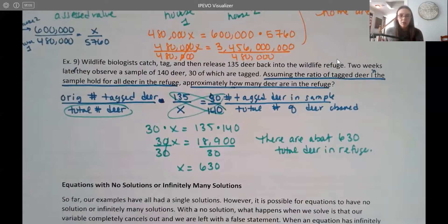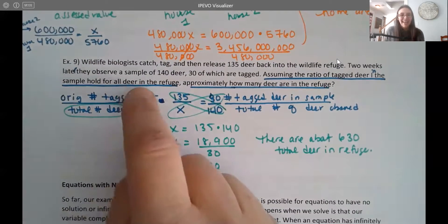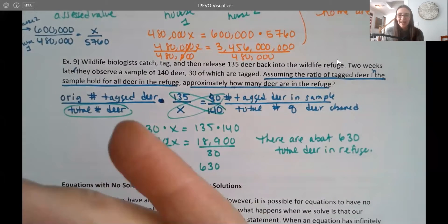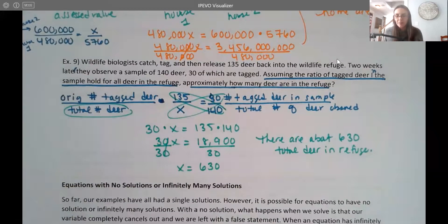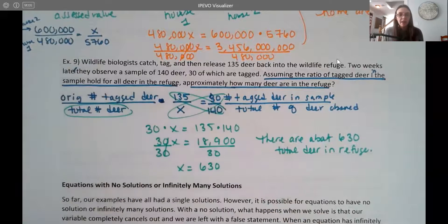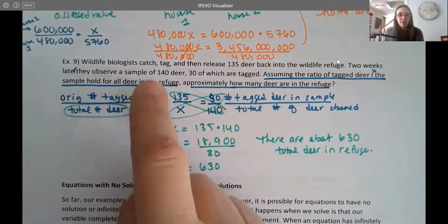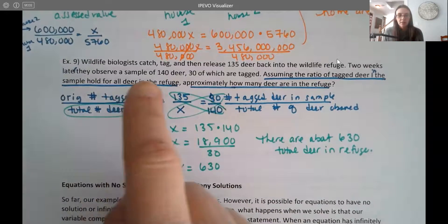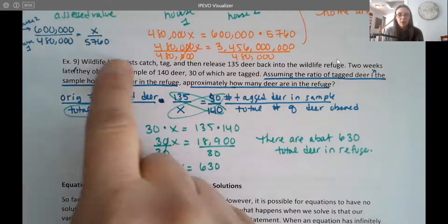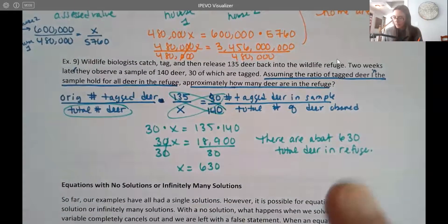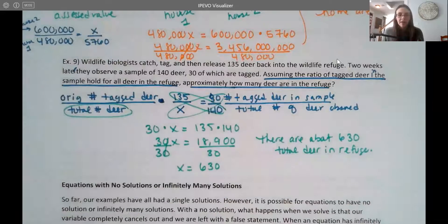So here again, the ratio was really just about comparing tagged to the total in both cases. But again, there's more than one way to set that up. I think this is probably the easiest way to do that, is thinking about your tagged to your total in each case. So here you have the original, thinking about the whole population of deer. And then here you have your sample of tagged to the total.